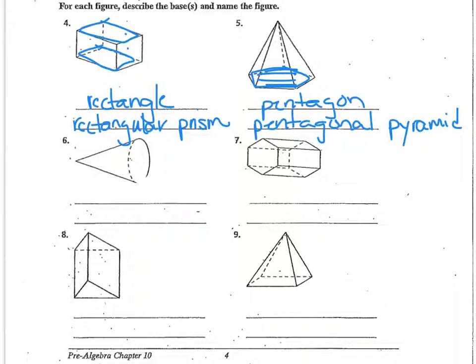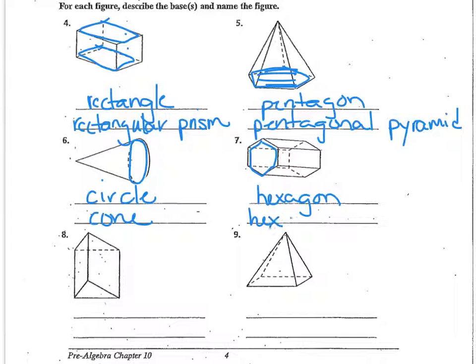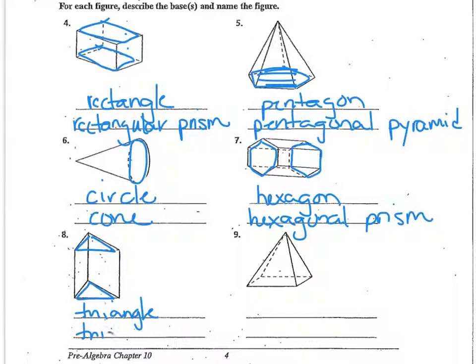And you can see that the shapes around the outside are triangles. The next figure has a circular base, so we just call this figure a cone. And number seven, the shape of the base has six sides, so that's a hexagon — this is a hexagonal prism, because there are two bases and the remaining faces are rectangles. And number eight, the base is a triangle, so this is a triangular prism, because there are two bases and the remaining faces are rectangles.